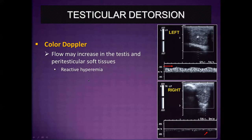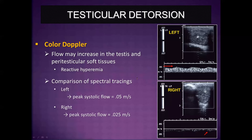For testicular detorsion, if you look at the spectral waveform analysis, patients who have detorsed may demonstrate increased flow in the testicle and peritesticular soft tissues secondary to reactive hyperemia. In one patient who had resolved left testicular pain by the time of ultrasound, the peak systolic flow on the symptomatic left side was 0.05 meters per second, compared to 0.025 on the asymptomatic right. This assumes Doppler settings are not changed between tracings, as that could falsely alter the appearance of peak systolic flow.